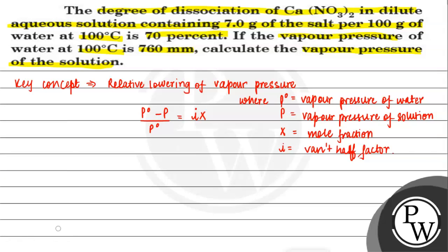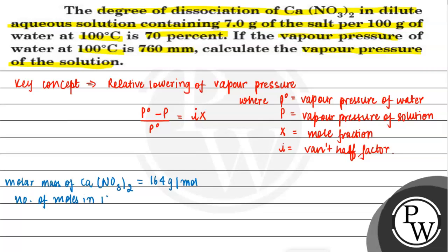Now we are going to solve this question. First, the molar mass of calcium nitrate — Ca(NO₃)₂ — is 164 grams per mole. The number of moles in 7 grams of calcium nitrate is mass given divided by molar mass, which equals 0.0427 moles.